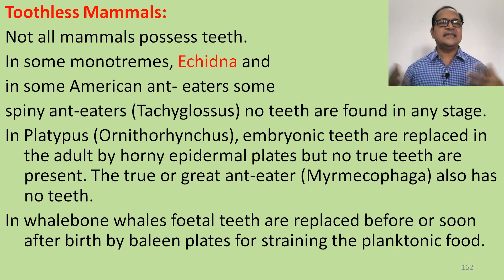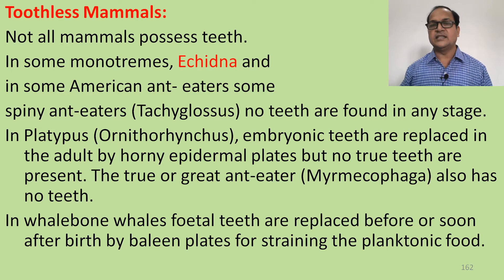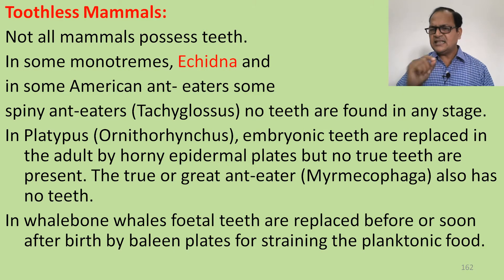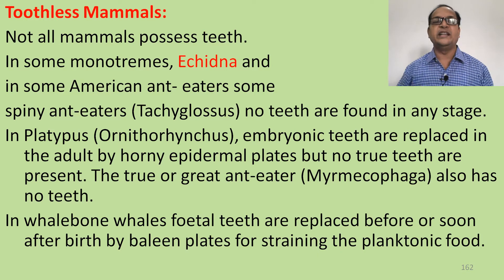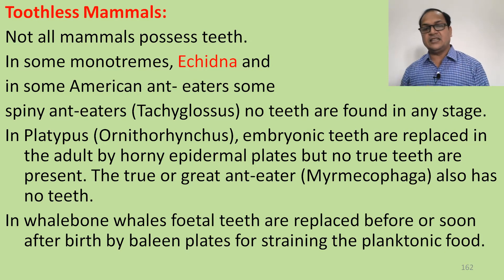Not all mammals possess teeth. In some monotremes — echidna, American anteater, and spiny anteater — Tachyglossus have no teeth at any stage. The duck-billed platypus Ornithorhynchus anatinus has no true teeth; they may have embryonic teeth, but these are replaced in adults by horny epidermal plates. In Myrmecophaga there are no teeth, and in whales, fetal teeth are present but replaced before birth by baleen plates for straining planktonic food.